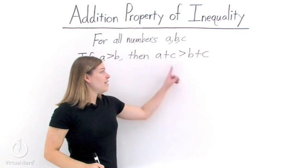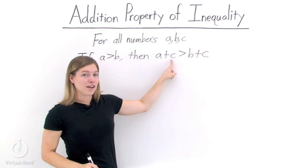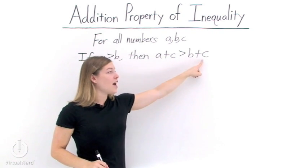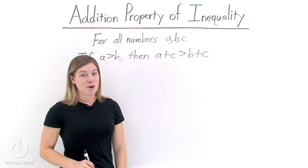This means if we add c to one side of our inequality, we must also add c to the other side of our inequality in order to preserve our inequality.